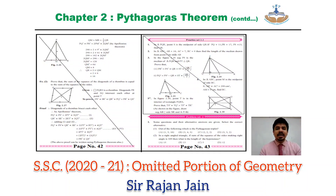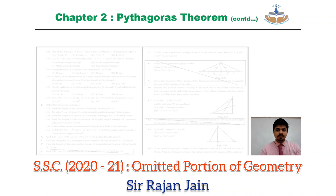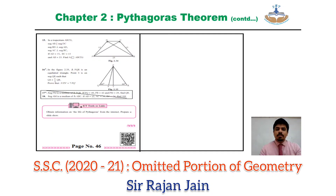Then page number 43 — entire practice set 2.2 is omitted. Practice set 2.2 is based on either application of Pythagoras theorem or Apollonius theorem. Since those theorems are omitted, the entire practice set 2.2 is also omitted. Then on page number 44, bottom of the page, question number 6 is omitted. On page number 45, question number 8, 9, and 12 are omitted. On page number 46, question number 17 and 18 — those are based on Apollonius theorem and hence omitted.